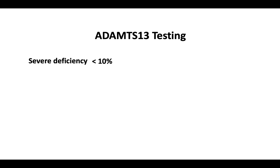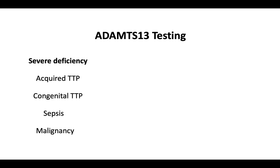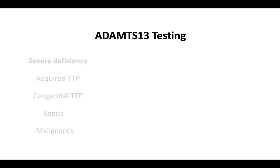Once a clinical diagnosis has been made, the laboratory test that helps confirm or refute the diagnosis is ADAMTS-13 testing. As discussed in our first video, TTP Basics, the primary pathophysiology of TTP is severe deficiency of ADAMTS-13, manifested by activity levels less than 10%. This finding confirms the diagnosis of acquired TTP — that is, TTP due to an acquired ADAMTS-13 inhibitor — and congenital TTP, due to congenital absence of or mutation in ADAMTS-13. Severe deficiency can also be seen in sepsis and malignancy; therefore, ADAMTS-13 activity less than 10% is not 100% sensitive or specific for TTP, and laboratory values alone cannot be used to make or exclude the diagnosis. If ADAMTS-13 shows low activity levels of 10% to 60%, it is more likely the patient has an underlying inflammatory disorder such as sepsis or malignancy.